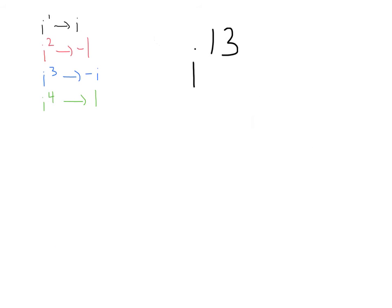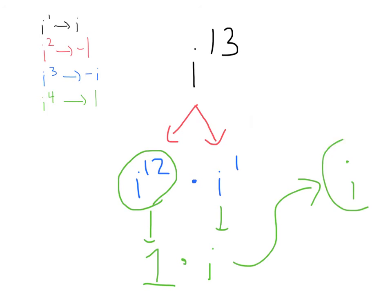All right, that's all nice and dandy, but what if we have a power that is not a multiple of 4, like i to the 13th? Let's go ahead and break this into i to the 12th times i to the 1. This is the same thing as i to the 13th, but since we have this i to the 12th here, which we know is equal to 1, since it's a power that is a multiple of 4, that would just be 1 times this i to the 1, which is just i, and that's going to simplify to i.